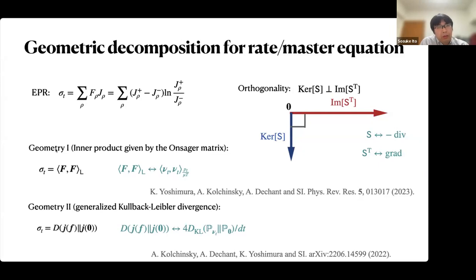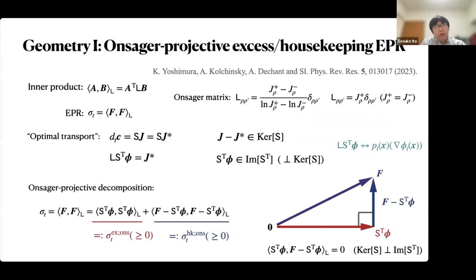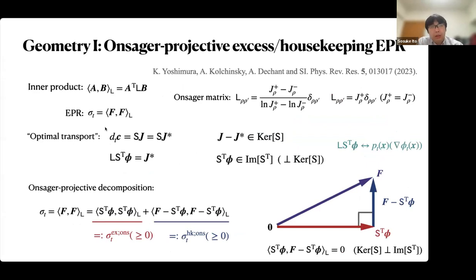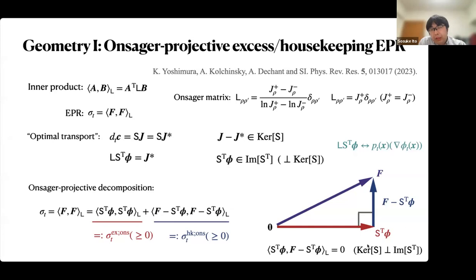For the first geometry, we consider the inner product given by the Onsager matrix. The entropy production rate is given by the square of the norm of f. We consider the optimal transport for the rate equations, meaning j-star gives the same time evolution, and j-star is given by the gradient of a potential. Based on this orthogonality, we can obtain the geometric decomposition, because this orthogonality corresponds to the Pythagorean theorem.